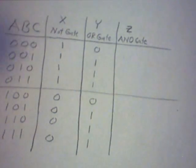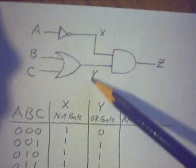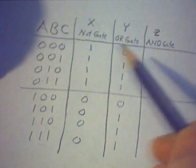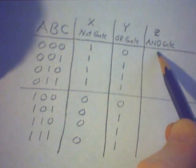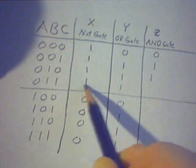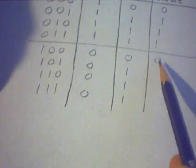Now our inputs are not A and B anymore. They're actually X and Y as shown in this diagram. So I need to look at just those two columns. And any time both of those are on, both of those are on. So I have a 0, 1, 1, 1. And 0 is all the way down.